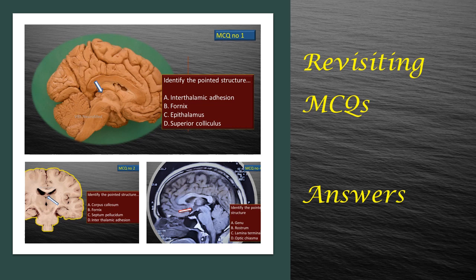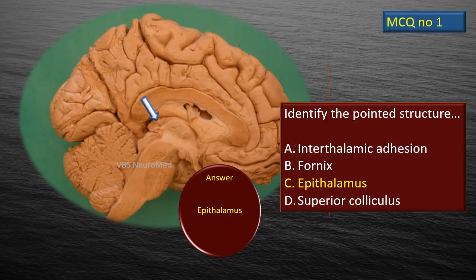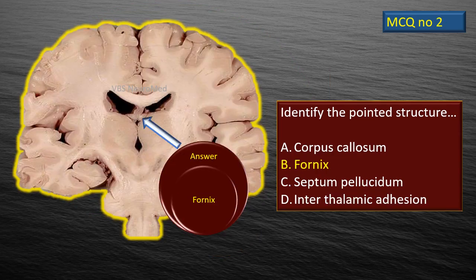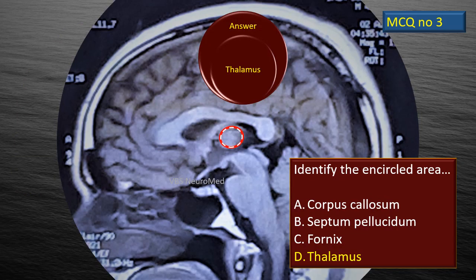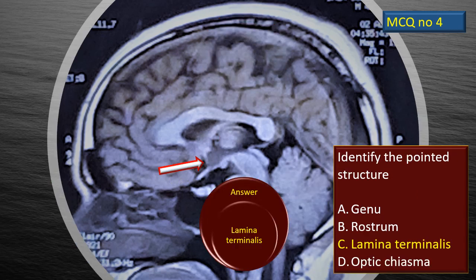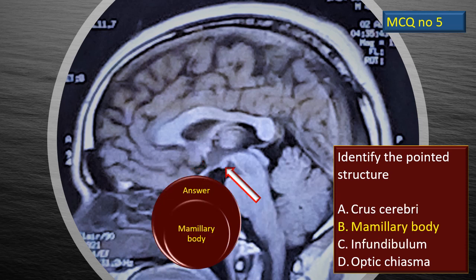Now let us re-examine the MCQs and correct our answers. MCQ number 1: identify the pointed structure — that is the epithalamus. MCQ number 2: that is the fornix. MCQ number 3: this mid-sagittal MRI shows the oval area as the thalamus. MCQ number 4: the lamina terminalis is highlighted — answer is C, lamina terminalis. Last MCQ: in the floor, the mammillary body has been highlighted — answer B, mammillary body.